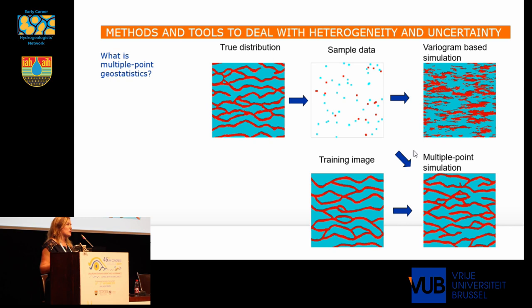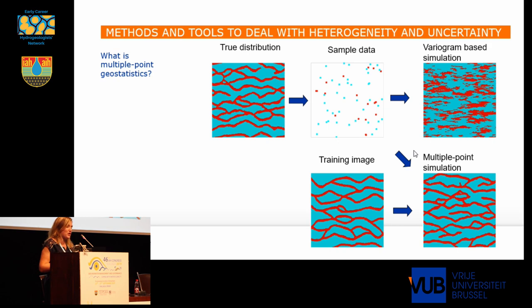Multiple-point geostatistics is essentially a method to simulate patterns of complex geological heterogeneity. For example, if we would have a pattern with high conductivity channels in a lower permeability background, this would have an effect on how groundwater behaves. If we would use variogram-based simulations to simulate this, we would not do a very good job in preserving the continuity of these structures.